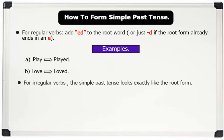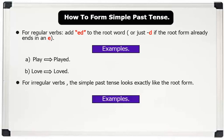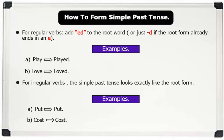2. For irregular verbs, the simple past tense looks exactly like the root form. Examples: Root word 'put' remains 'put'. Root word 'cost' remains 'cost'.